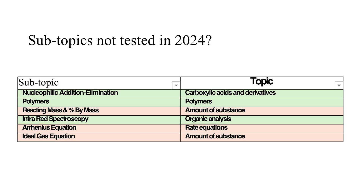It's worth looking at which subtopics were not assessed the previous year, as those become slightly more likely to be assessed the following year — though no guarantees. In 2024, there were no marks on Paper 2 for nucleophilic addition-elimination, polymers, or infrared spectroscopy from organic chemistry. From physical chemistry, topics often assessed but absent in 2024 include reacting mass and percentage by mass calculations, the Arrhenius equation, and the ideal gas equation.